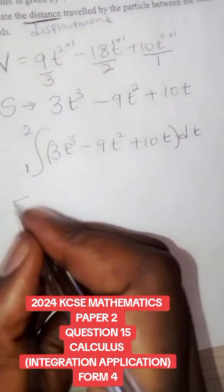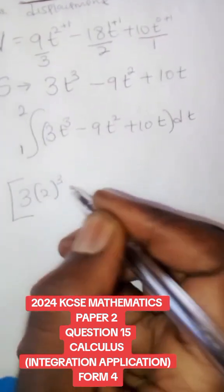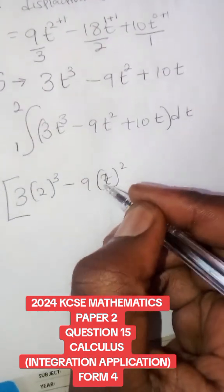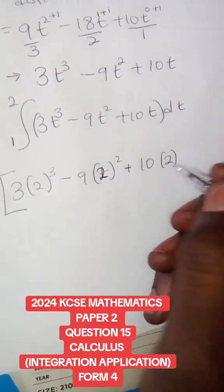For the first part, replace t with 2, so it is 3 × 2³ - 9 × 2² (not t²) + 10 × 2.